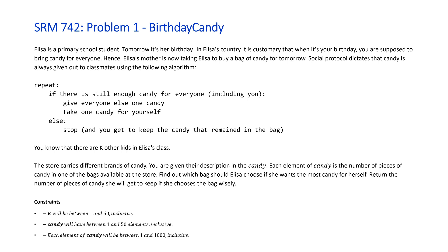You know that there are K other kids in Eliza's class. The store carries different brands of candy. Each element of the candy array is the number of pieces of candy in one of the bags available at the store. Find out which bag Eliza should choose to maximize the candy for herself. The constraints are: between 1 and 50 students (K), between 1 and 50 elements in the candy vector, and each element is between 1 and 1,000.